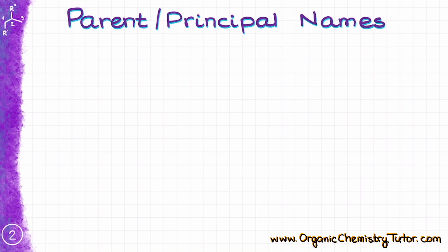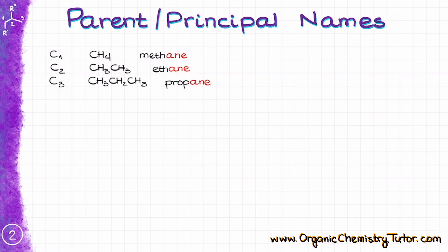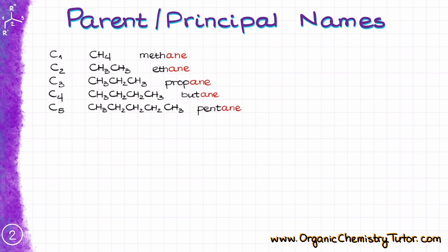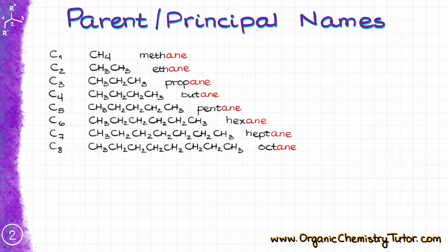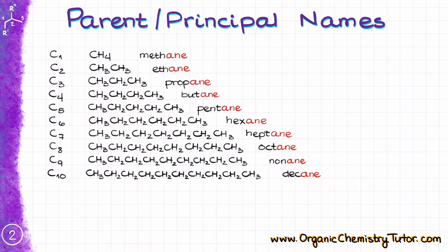In order to start naming molecules, we first need to know the basic building blocks of the nomenclature — the parent or principal names for chains with different lengths. The simplest one, with only one carbon, is methane. For two carbons, we have ethane. Then for three carbons, propane; butane for 4, pentane for 5, then hexane, heptane, octane, nonane, and finally decane for the 10-carbon chain.